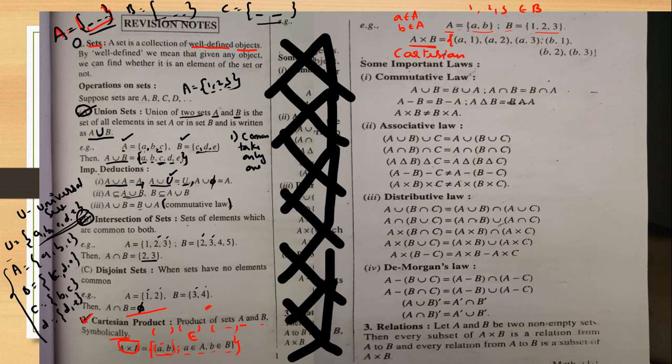In engineering backgrounds — Mechanical, Electrical, Automobile — the Cartesian product is called the cross product. The dot product is a separate concept.